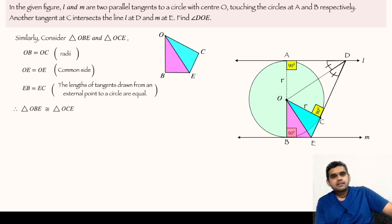By SSS, we can say that these two triangles are also congruent, and using the property of congruent triangles, we can say that angle BEO is equal to angle CEO. Let us mark them on the figure, so these two angles are equal.